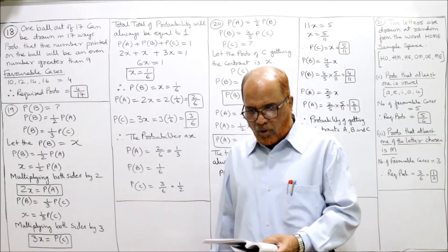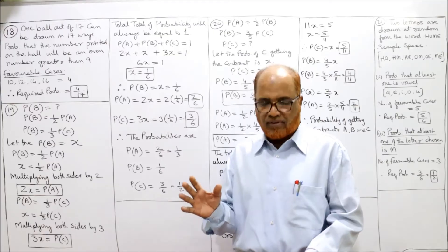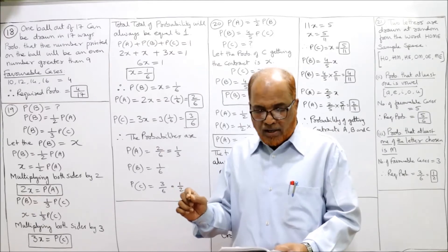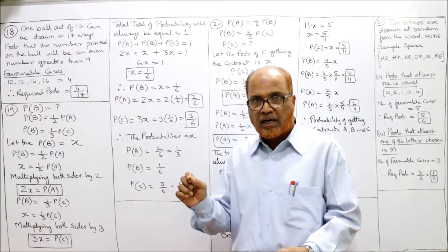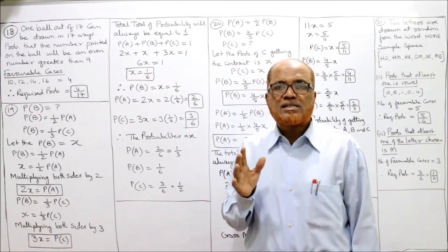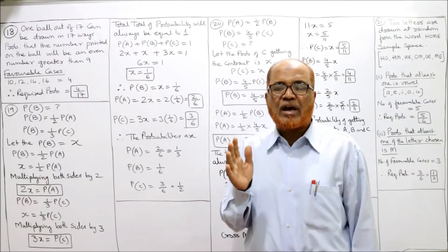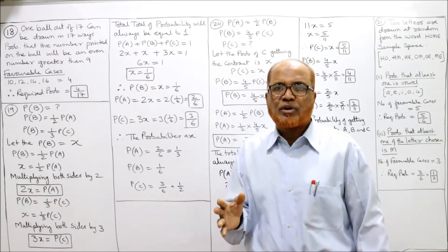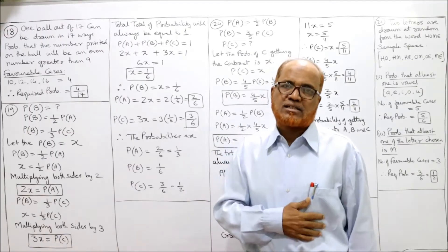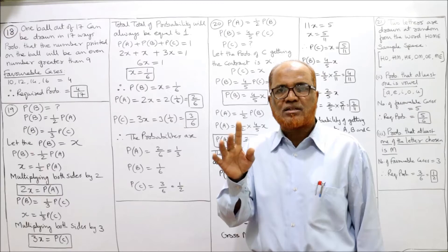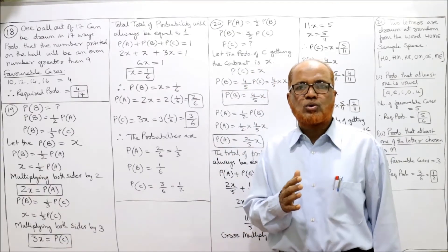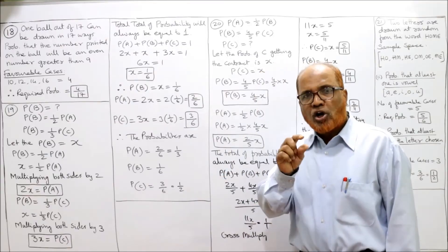See the 18th problem. There are 17 balls numbered from 1 to 17 in a bag. Each ball has one number printed on it. If a person selects one ball at random, what is the probability that the number printed on the ball will be an even number greater than 9? So out of 17 balls, one ball we are picking, so any ball can come. There are 17 equally likely, totally exhaustive, and mutually exclusive outcomes. Totally exhaustive because we have a maximum of 17 balls. Equally likely means every ball has an equal chance of being selected. Mutually exclusive means when one ball is selected, the other ball cannot be selected.